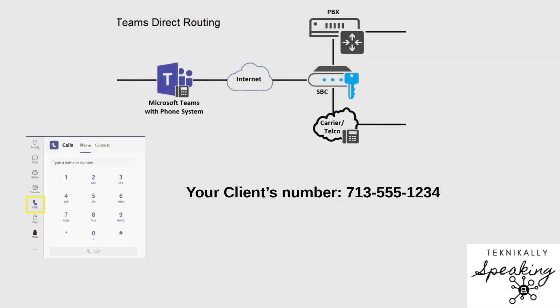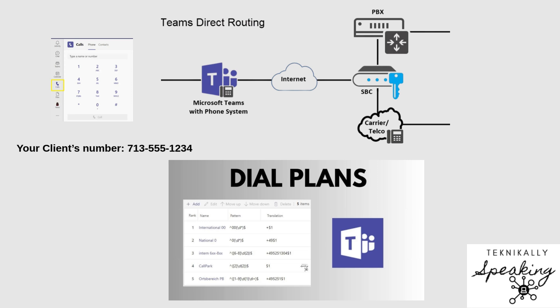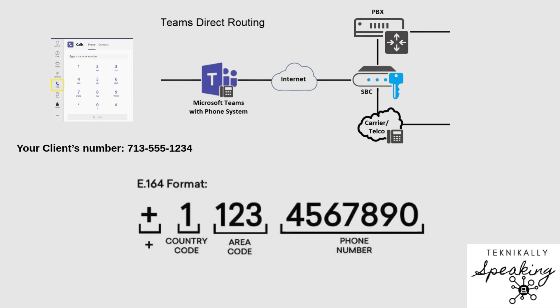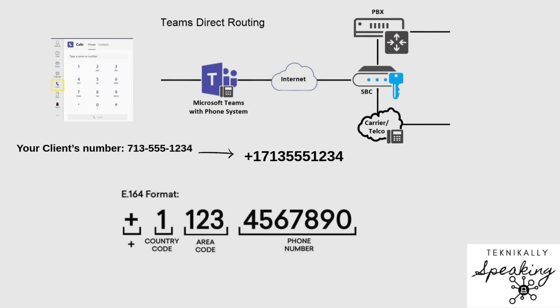Let's say you're in Teams and you dial your client's number, something like 713-555-1234. Before that number goes anywhere, Teams applies a dial plan. That just means it converts what you typed into a standard global format called E.164. So your number becomes something like this — add a country code, plus one: +1-713-555-1234. And plus one is the United States country code.